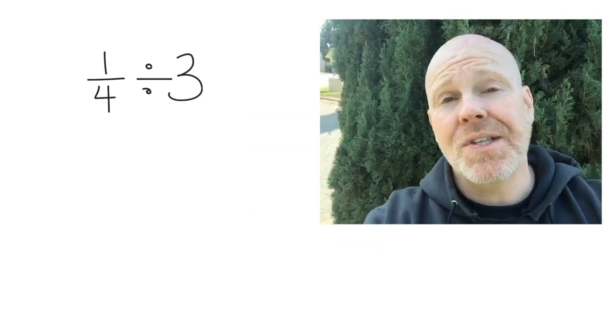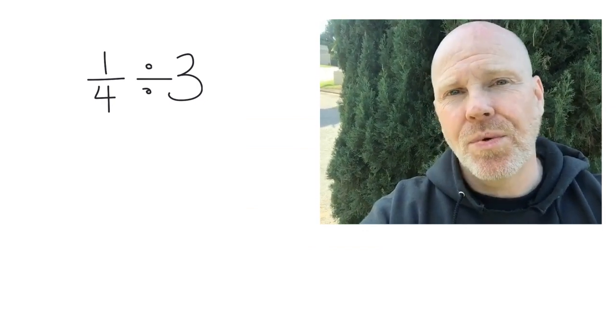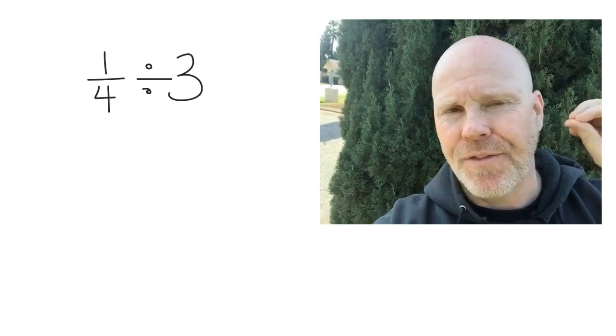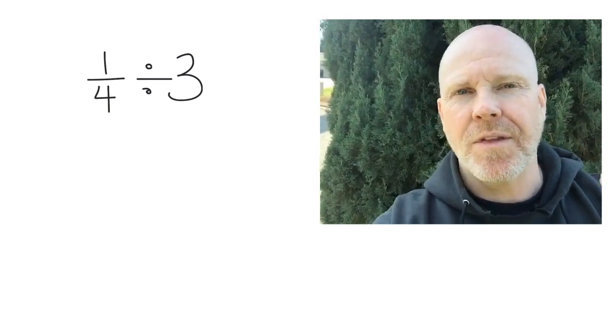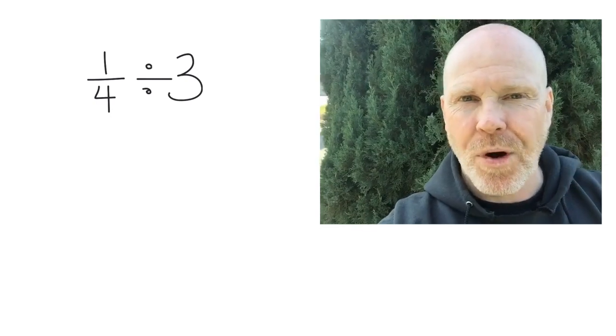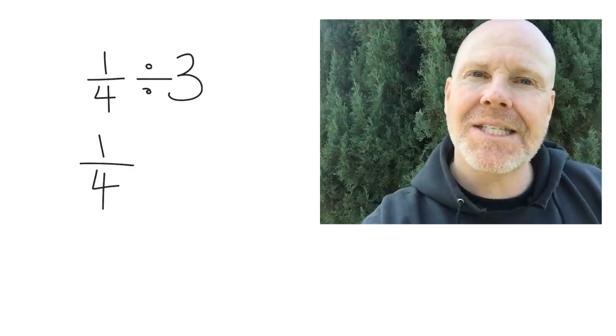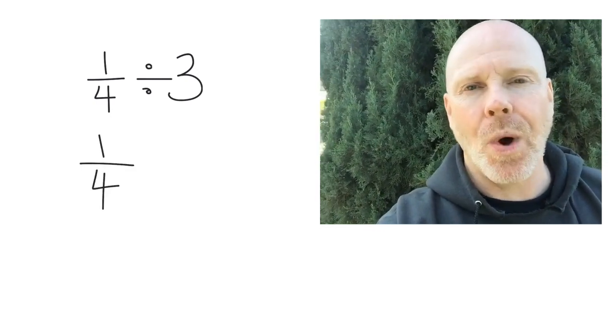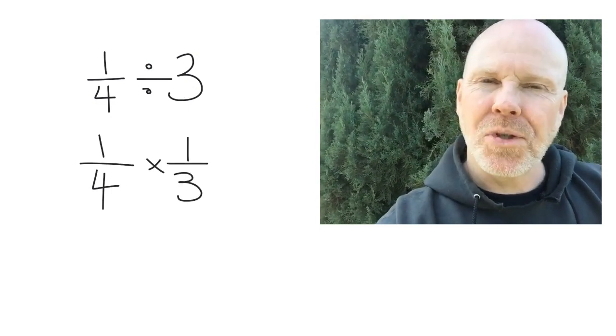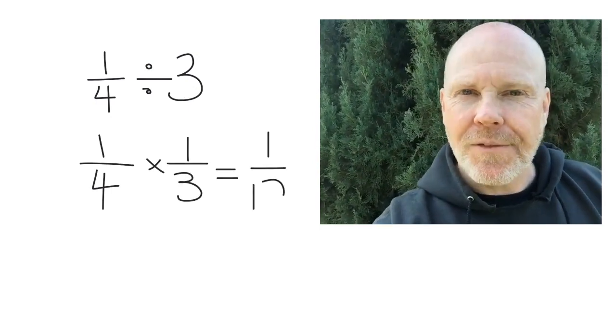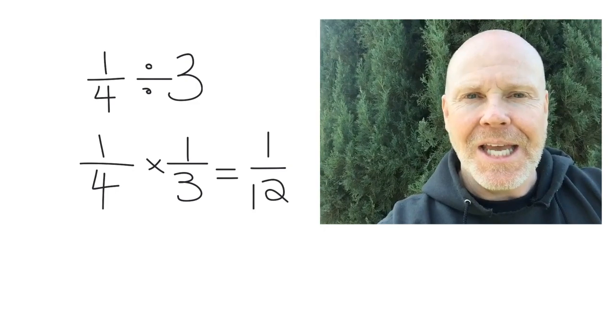So that wraps up this lesson where students discover the rule that to figure out what does one-fourth divided by three look like, it's going to be take that one-fourth, you're going to chop it up into three pieces, which turns them into twelfths. So we've got that multiplying by the reciprocal kind of thing going on there. So happy dividing.